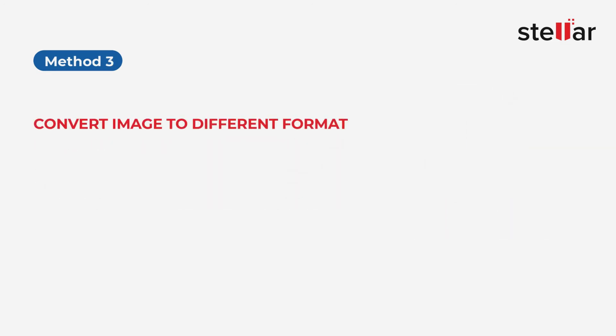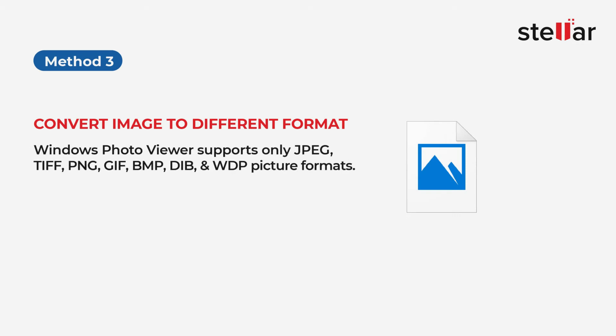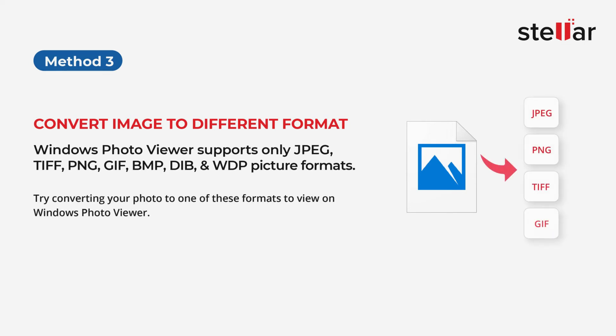Method 3: Convert the image to a different format. Windows Photo Viewer supports only JPEG, TIFF, PNG, GIF, BMP, Dib, and WDP picture formats. Try converting your photo to one of these formats to view it on Windows Photo Viewer.